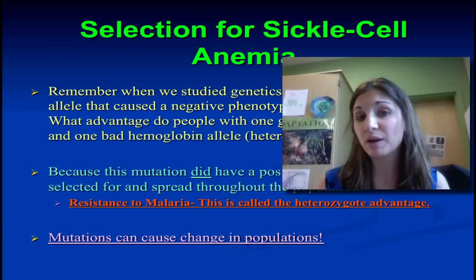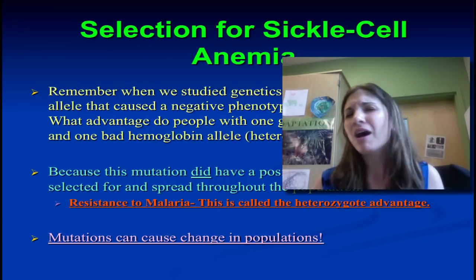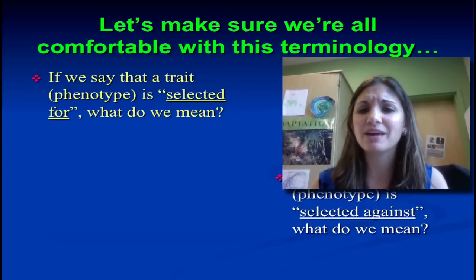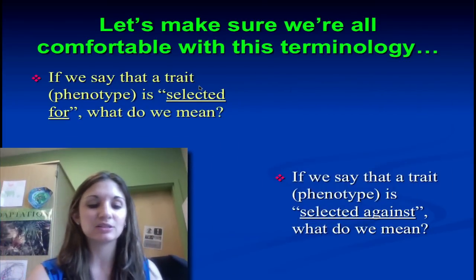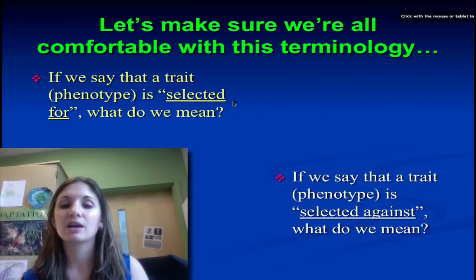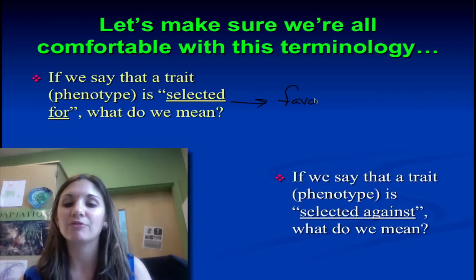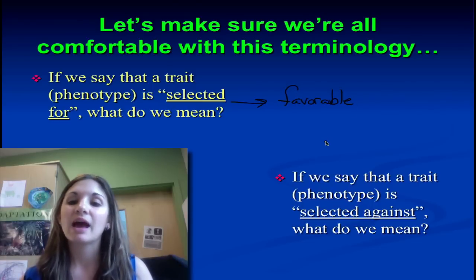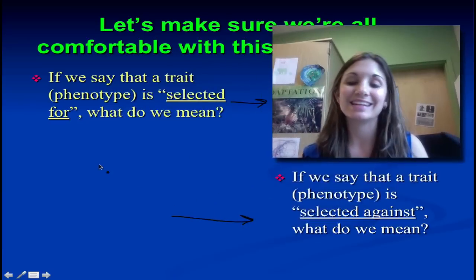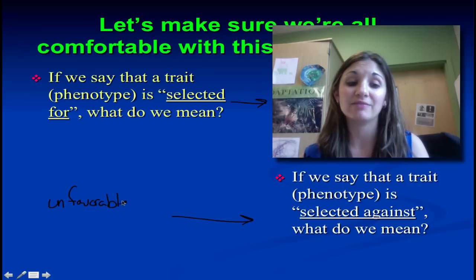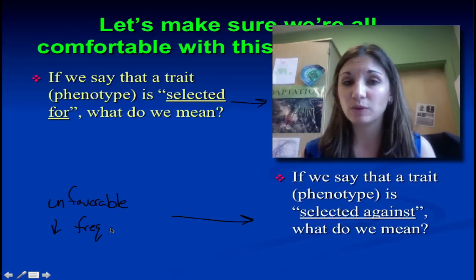So, mutations can cause change in populations — but how often do they occur? First, let's clarify terminology. When we say a trait is selected for, it means the trait is favorable and the environment is encouraging it; therefore we'll see an increase in frequency over time. If a trait is selected against, it is unfavorable as determined by the environment, and we should see a decrease in frequency over time because natural selection will weed it out.